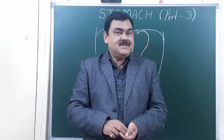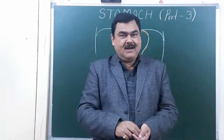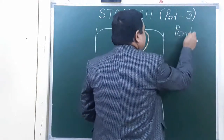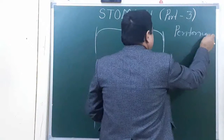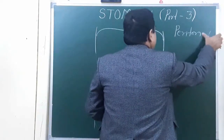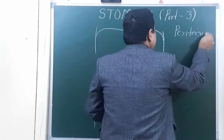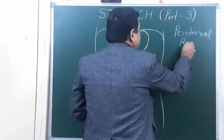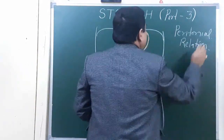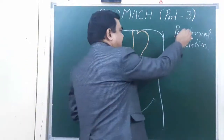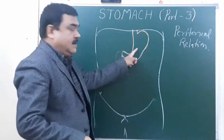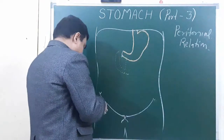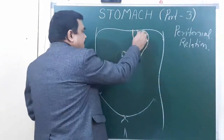Now we will discuss the relations of the stomach. First of all, peritoneal relations. Here you can see this is the stomach — this is the lesser curvature and this is the greater curvature.